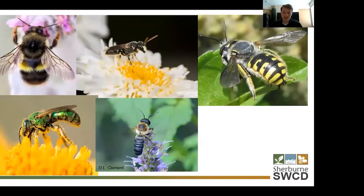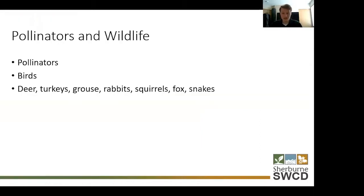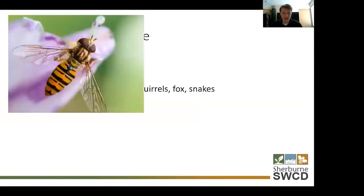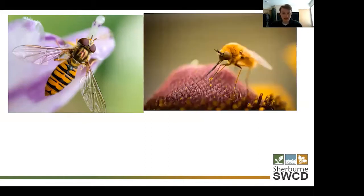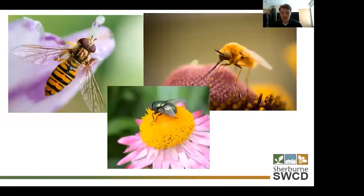But it's not just bees that are important for pollination — it's also flies. Here we have a syrphid fly that actually looks like a bee. You can differentiate between bees and flies because bees have four wings and flies have two wings. So the syrphid fly, the bee fly, and the blow fly — but it's more than just bees and flies.